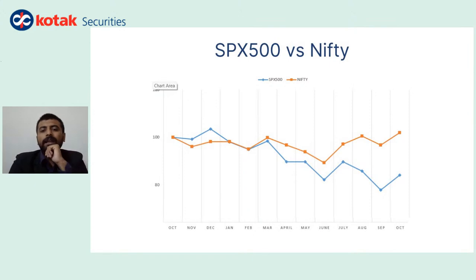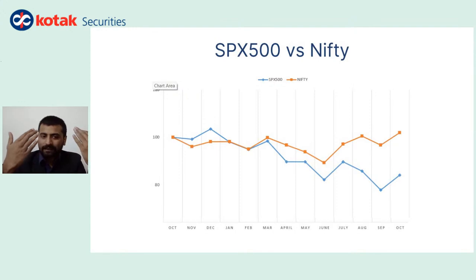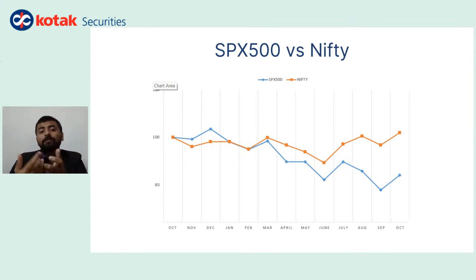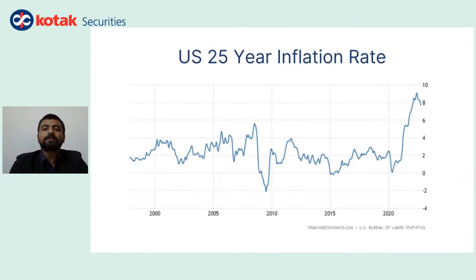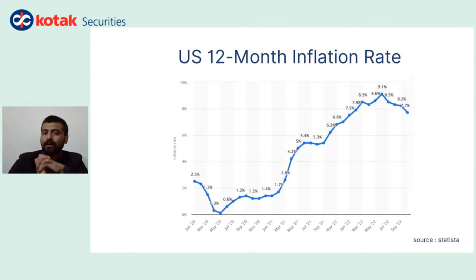When we come back to the S&P 500 graph, we can notice that the index has basically started correcting. One of the key reasons it is correcting is because of the 12-month inflation rate that is going up right now.